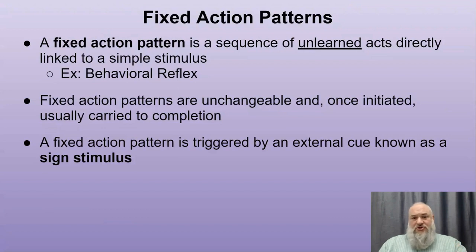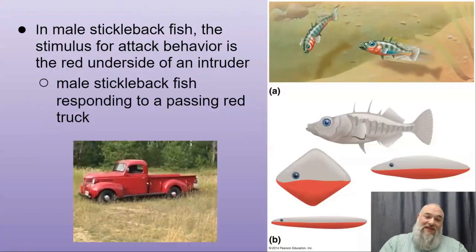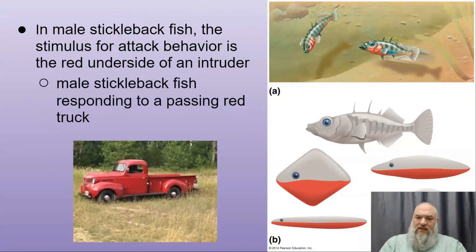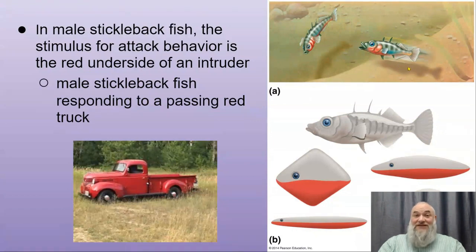In the leg example, the sign stimulus is the stretch in your quadriceps muscles. With the fight-or-flight response, a loud noise behind you causes you to jump, turn, increase heart rate, and release adrenaline — that's an auditory cue, or it could be visual. Male sticklebacks with red underbellies respond aggressively to any other male with red. A researcher noticed that when a red truck drove by the window, the sticklebacks responded aggressively — they see red, they get mad. That's a stimulus and a response.